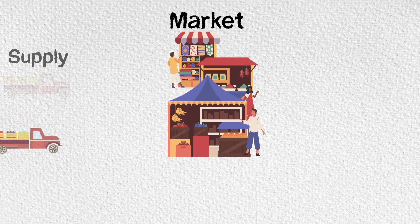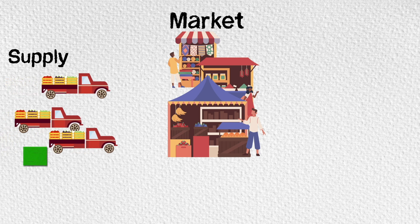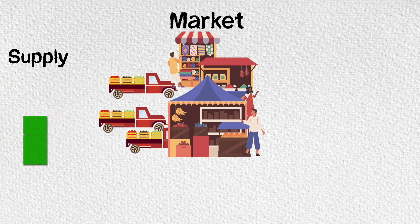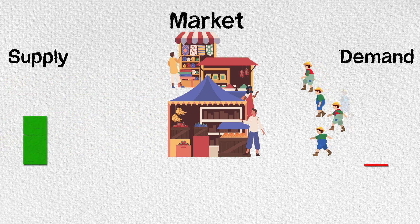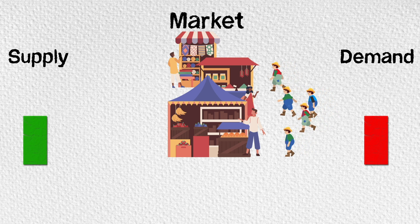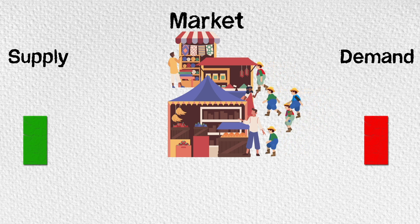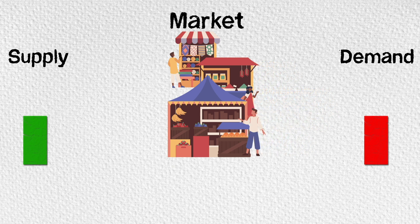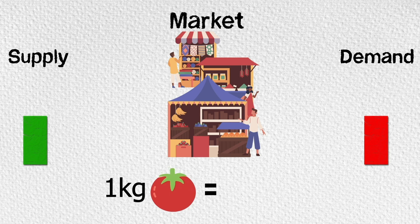Here's our market. Imagine that we get 3 lorries of tomatoes every day, and on average about 10 people buy tomatoes from the market every day. Based on the supply of tomatoes and the demand for the same, on that particular day the price is decided. So that day, 1 kg of tomatoes costs 50 rupees.